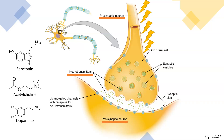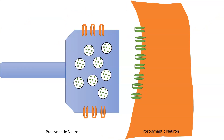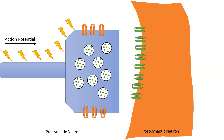Let's take a look at the mechanism of how we convert the action potential to a chemical signal. Here we see a poorly drawn synapse — we don't have an animator budget. An action potential is traveling all the way down to the synaptic terminal of our presynaptic neuron. You'll also notice, situated at the synaptic terminal, neurotransmitters contained in vesicles. Since they are located at the synapse, we call them synaptic vesicles.